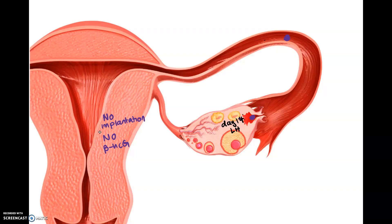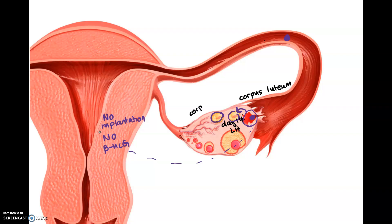With no beta-HCG traveling to the corpus luteum, the corpus luteum degenerates. It degenerates into a scar-like tissue called the corpus albicans — a non-functional ovarian scar — meaning there will be no estrogen or progesterone released.